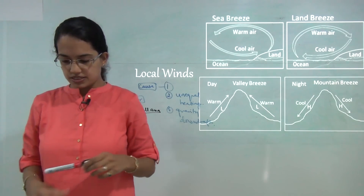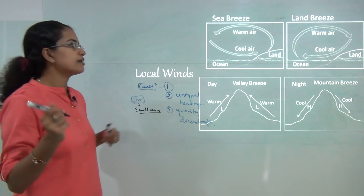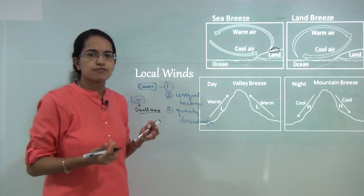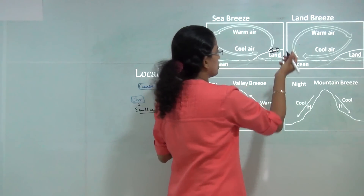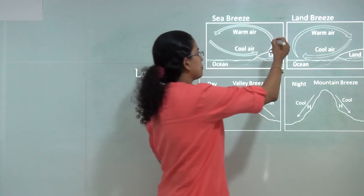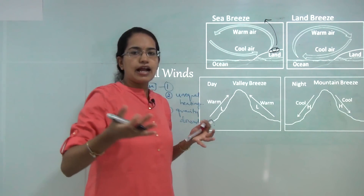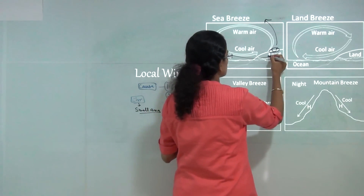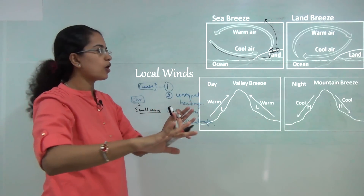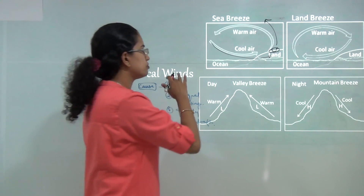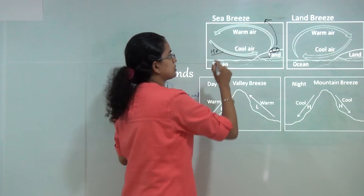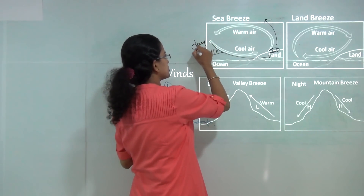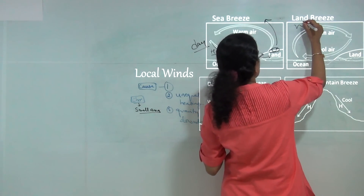One type of local wind is the sea breeze. During the daytime, the land parcel heats very quickly, causing warm air to rise and creating a region of low pressure over land. To compensate, cool air moves from the ocean — which is at higher pressure — towards the land. This movement of cool air from ocean to land is known as the sea breeze and predominantly occurs during the day.